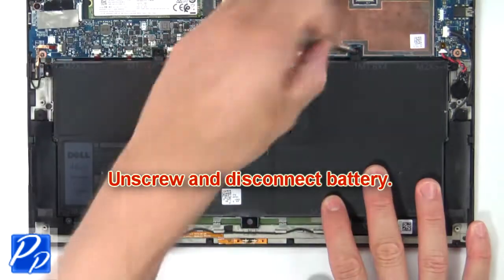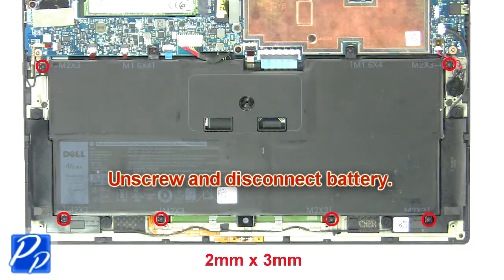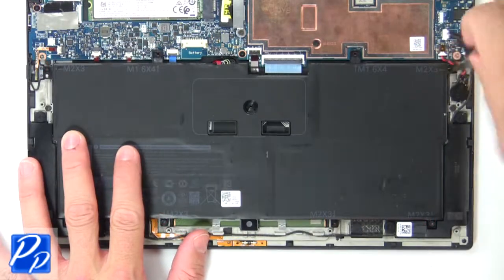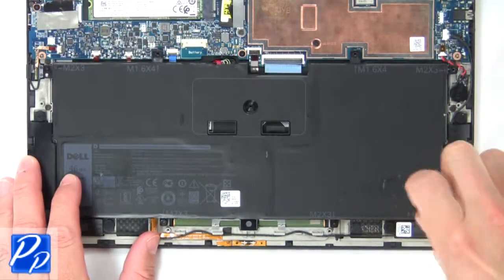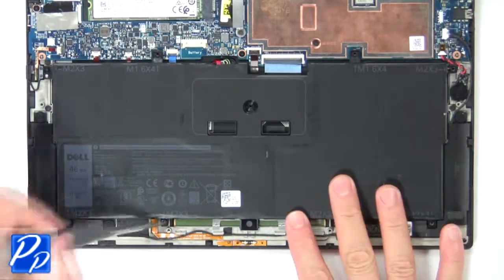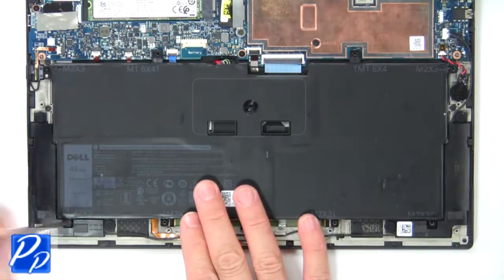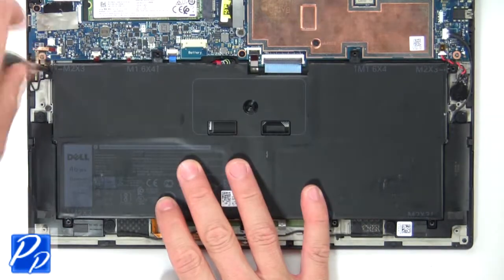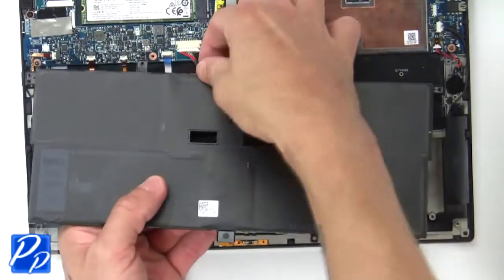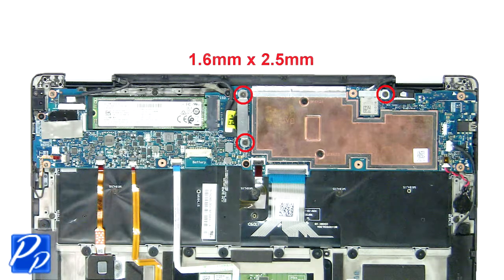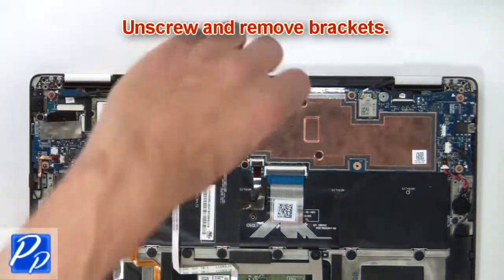Now unscrew and disconnect battery. Then unscrew and remove brackets.